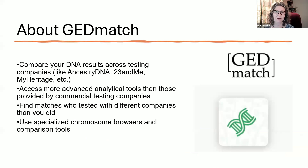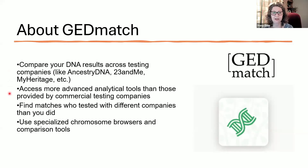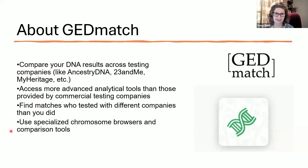Now let's talk about GEDmatch. GEDmatch is a third-party tool that lets you compare your DNA results across testing companies such as AncestryDNA, 23andMe, MyHeritage, and LivingDNA. It has more advanced analytical tools. Each commercial testing company has its own set of tools, but GEDmatch gives us a whole array of additional tools. If you've only tested at one place and upload to GEDmatch, you can find matches who tested at different places. For example, if you tested at AncestryDNA, which does not have a chromosome browser, uploading to GEDmatch lets you use their chromosome browser to compare to others.